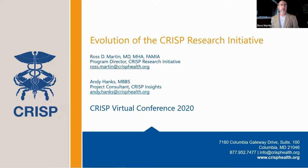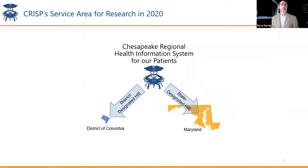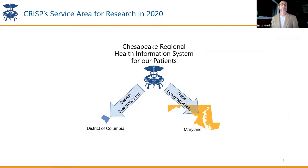We are a couple of years into this, and I'm going to give you an overview of it, and then we'll talk about where we're going from here with the new platform. For the purposes of this conversation, CRISP — if you're familiar with us — does more than just Maryland and D.C., but for the purposes of the research use case, we are currently limited to just doing this within Maryland and D.C. We also service West Virginia, and we're doing some new things with the state of Connecticut, but research is still just within Maryland and D.C., and that may change over time.